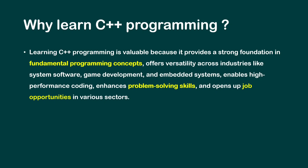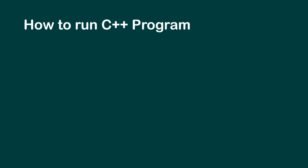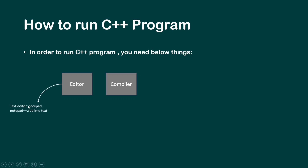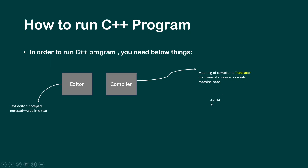Now let's see how to run a C++ program. To run a C++ program you need two things: an editor and a compiler. A text editor — like Notepad, Notepad++, or Sublime Text — is the first requirement. A compiler is a translator that translates source code into machine code.